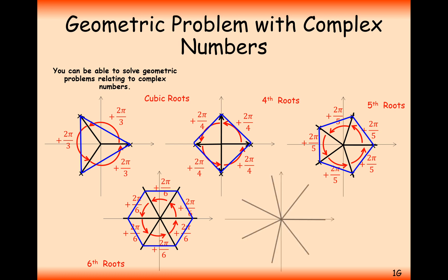And then the last one here, the heptagon, just keep on adding 2π by 7 onto the argument, and that will give you your perfect heptagon.